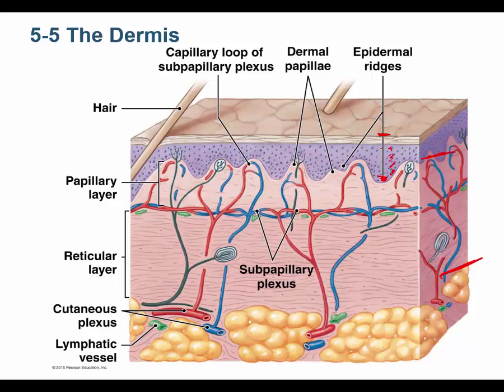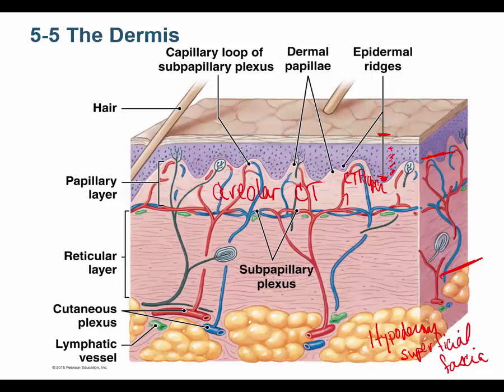When you memorize the layers of the epidermis — stratum germinativum, stratum spinosum, stratum granulosum, stratum lucidum, stratum corneum — realize the epidermis is one of two major layers of the skin. The hypodermis below is not really skin; it's superficial fascia, but we study it in the skin chapter. The dermis has two sublayers: the papillary layer, which is areolar connective tissue — memorize that.